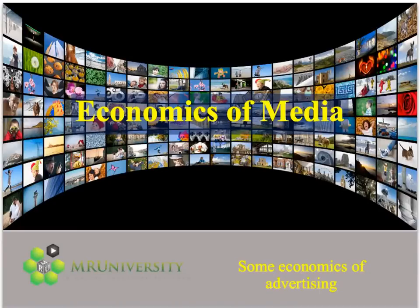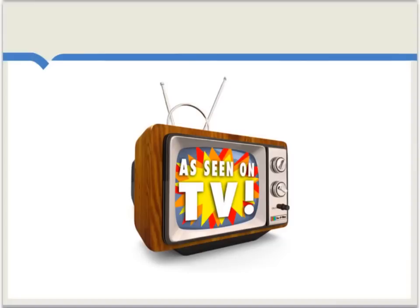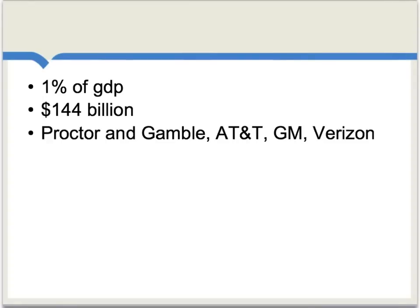Now let's consider some basic results in the economic theory of advertising. We see plenty of ads in everyday life, but there's also a lot about advertising which we don't understand. Just some basic facts: right now in the United States, advertising is about 1% of GDP, amounting to about $144 billion, and the four leading advertisers are listed here.